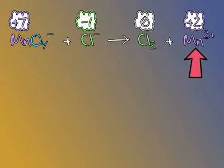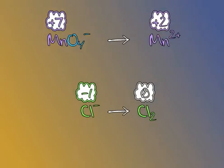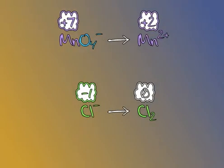First things first, split up this reaction into its half reactions. For the oxidation reaction, chloride yields chlorine. And for the reduction reaction, permanganate yields manganese 2+.